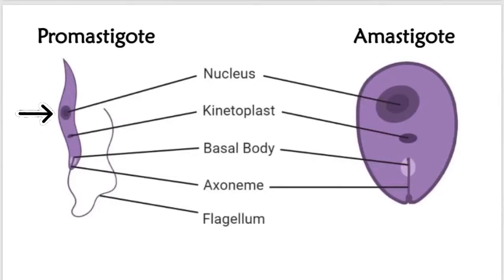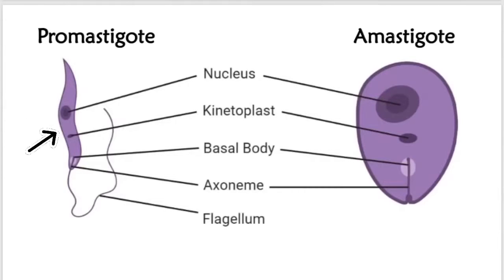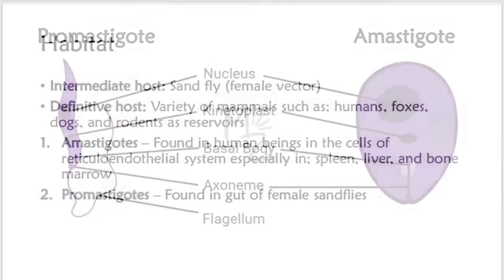On the other hand, if we look at the promastigote, it has a round to oval nucleus. It is long and slender. It has a flagellum, kinetoplast, and basal body.